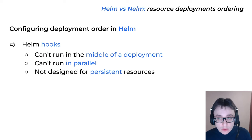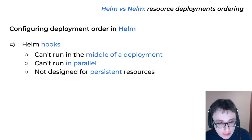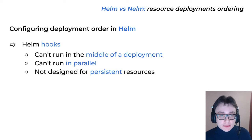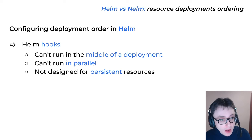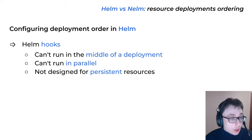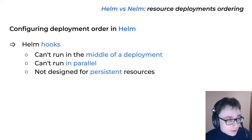There are a few ways to configure deployment order in Helm. The first is using Helm hooks, but there are serious issues with them. You can't run Helm hooks in the middle of a deployment — only at the very beginning or very end. You can't deploy two non-hook resources and then a hook just between them. Also, you can't run hooks in parallel — even if they have the same weight, they will still be executed sequentially. Hooks are also not designed for persistent resources like deployments or StatefulSets.